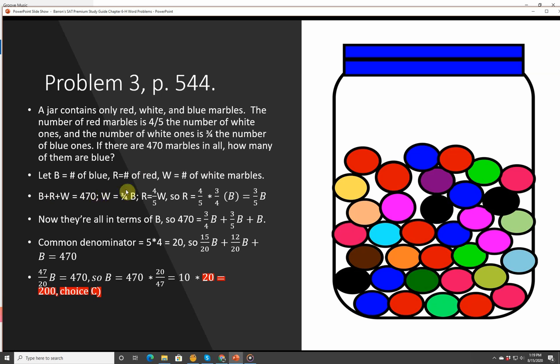Let B equal the number of blue marbles, R equals the number of red marbles, and W equals the number of white marbles. So B plus R plus W equals 470. We know that W is equal to 3 quarters B, so we can substitute in 3 quarters B for W. And R is equal to 4 fifths W, so R has to be 4 fifths times 3 quarters B, which equals 3 fifths B. So we substitute in. R is 3 fifths B, W is 3 quarters B, and then B is just B.